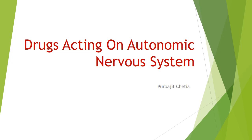We have already studied the pharmacokinetic and pharmacodynamic parts, so let's begin with the next topic: drugs acting on autonomic nervous systems. Please take your pen and paper and note down everything, because certain things I am not including in the PPT — I am detailing those verbally.